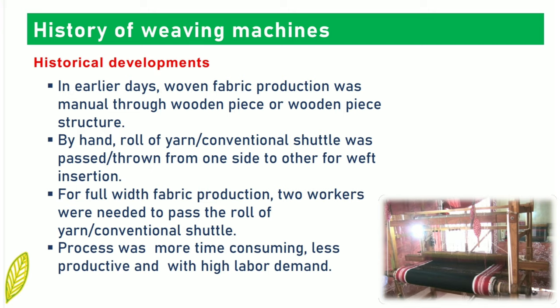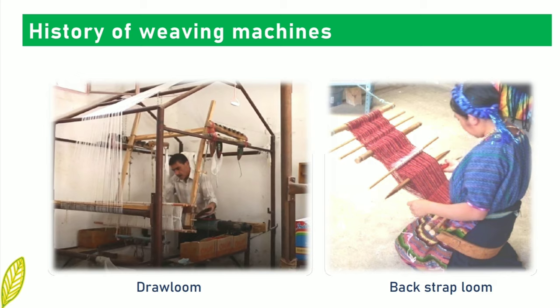In earlier days, woven fabric production was manual through a wooden piece or wooden piece structure. By hand, a roll of yarn or conventional shuttle was passed or thrown from one side to the other for weft insertion. For full-width fabric production, two workers were needed to pass the roll of yarn or conventional shuttle. The process was more time-consuming, less productive and with high labor demand. Examples of draw loom and backstrap loom are shown here.